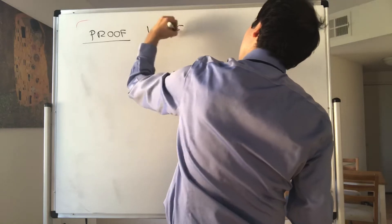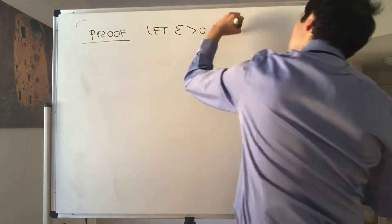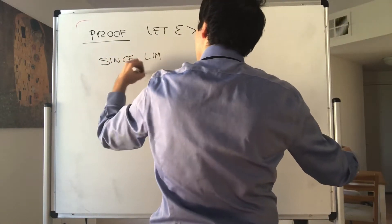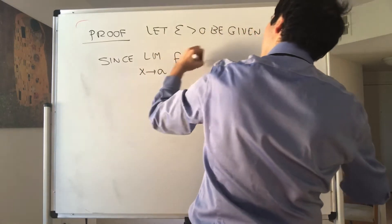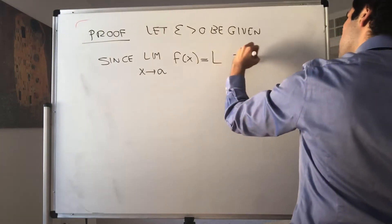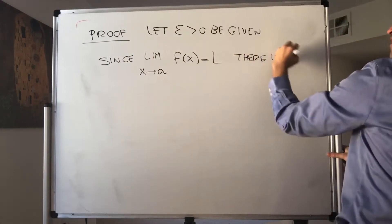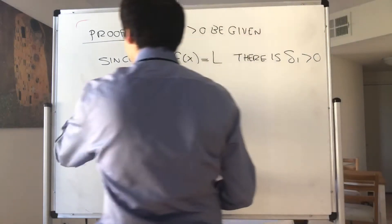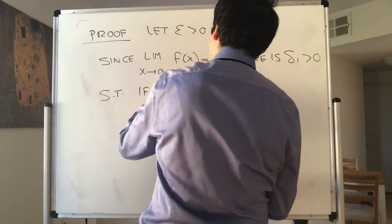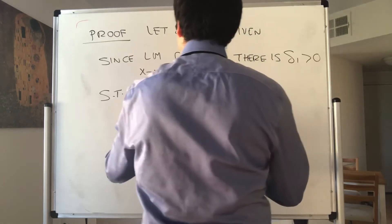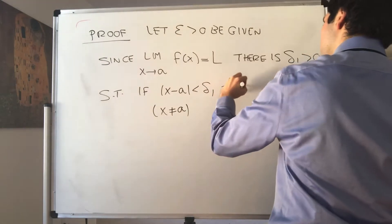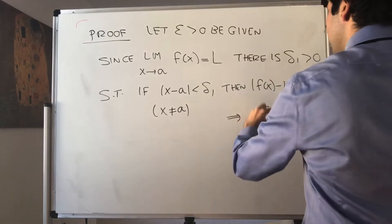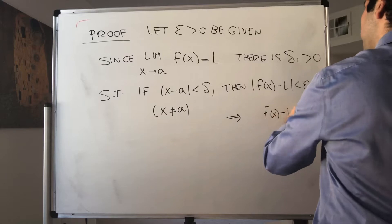So let epsilon be given. And let's first talk about f. Since the limit as x goes to a of f of x equals l, we know that there is a delta one positive such that if |x minus a| is less than delta one and x is not equal to a, then |f of x minus l| is less than epsilon. But this just implies f of x minus l is between negative epsilon and epsilon.